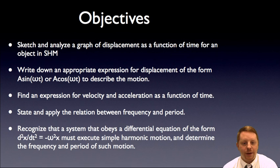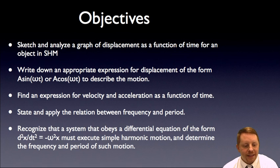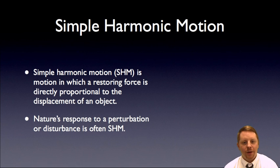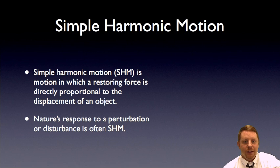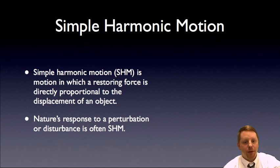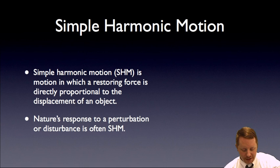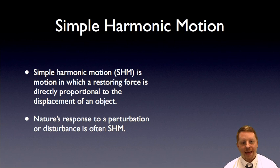The general differential equation form is: d squared x over dt squared, the second derivative of x with respect to time, is equal to negative omega squared x, where omega is the angular frequency. Simple harmonic motion really is nature's response to any sort of disturbance or perturbance — you see lots of examples in nature, like a tree branch pulled down and vibrating back and forth; that's damped simple harmonic motion. By definition, simple harmonic motion is motion in which a restoring force is directly proportional to the displacement of the object — a linear relationship.